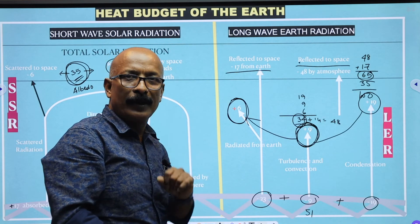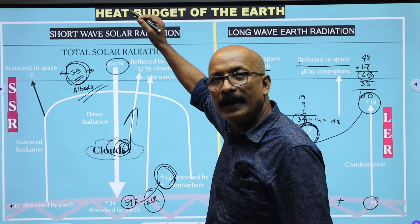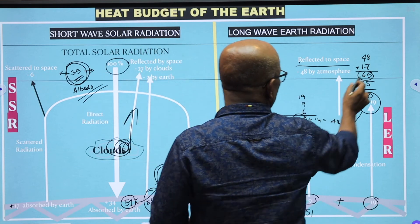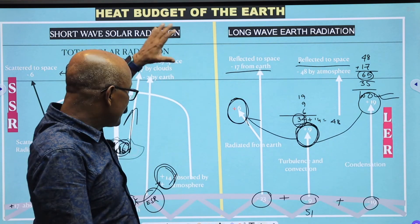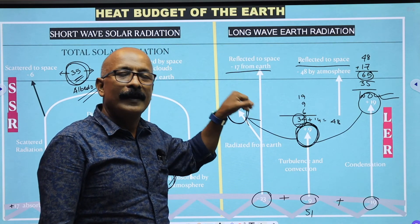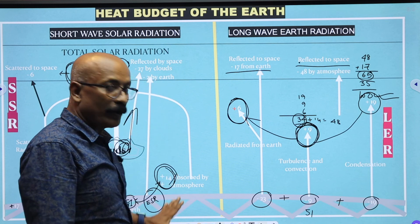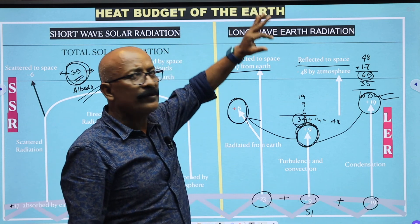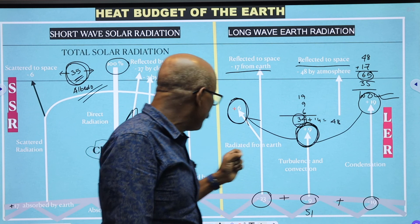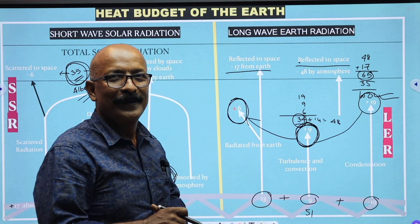So 100 units are balanced — 35 units as albedo and 65 units as outgoing long-wave earth radiation go back to space, totaling 100 units. This is the heat balance or heat budget. There is a balance between the incoming solar radiation and the outgoing radiation back to space, keeping a balance between the shortwave solar radiation and the long-wave earth radiation. This is the heat balance of the earth.